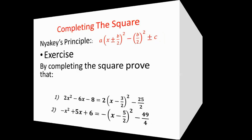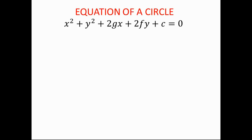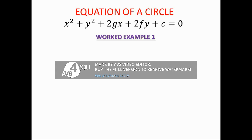Let's move on. This is the equation of a circle. We are going to use it to determine the center and the radius. Write down the given equation: x squared plus y squared minus 2x minus 6y equals 15.